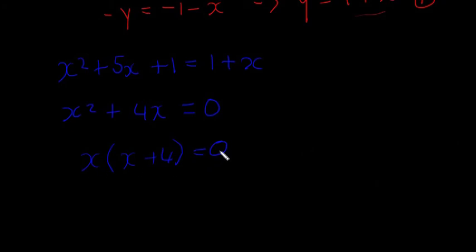So either x has to be equal to 0, or x + 4 has to be equal to 0, because if two things in their product is 0, one of them has to be 0. So we're going to say x = 0, or x + 4 = 0, which means x = -4. So we're not finished just yet.